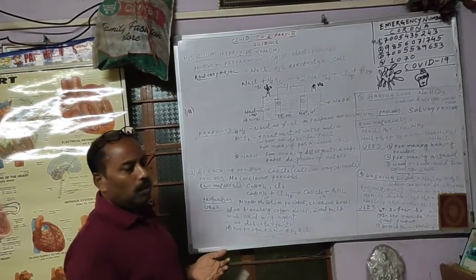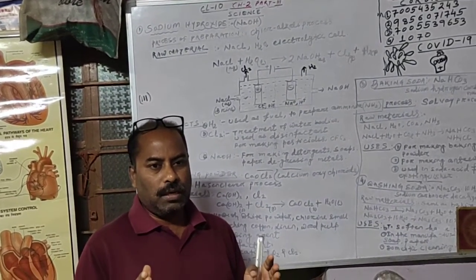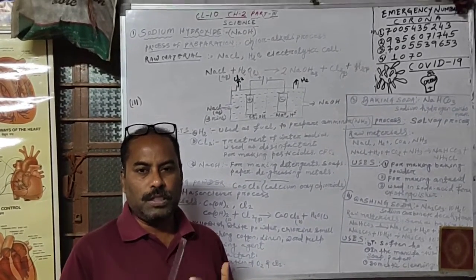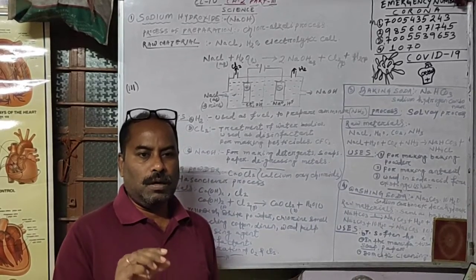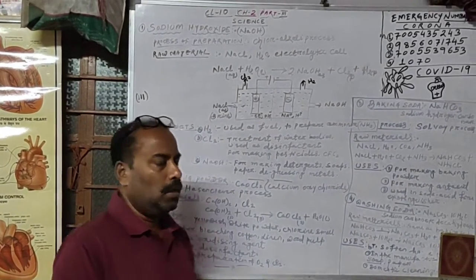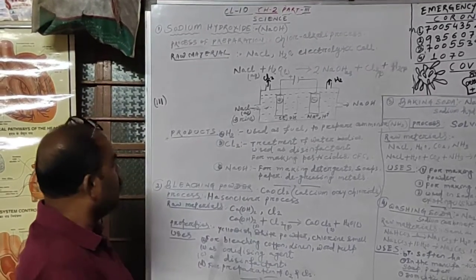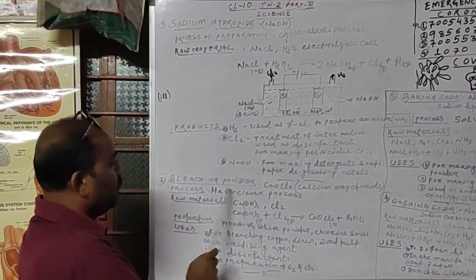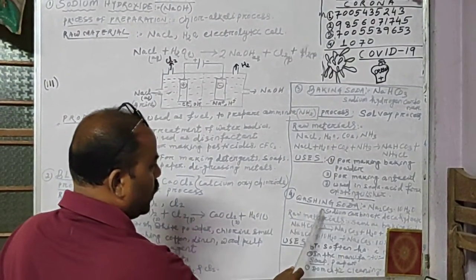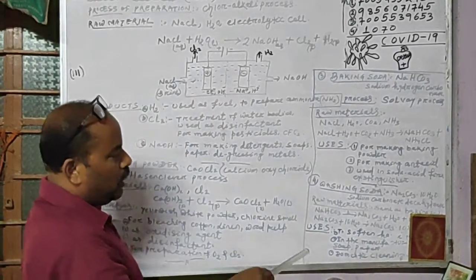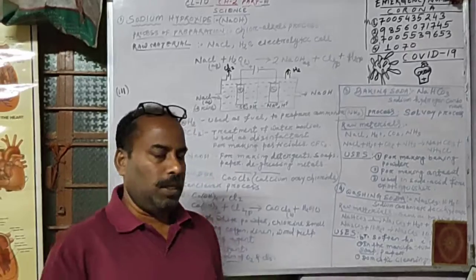Today we will discuss some salts which come in our everyday life and are very useful. These are: salt number one, sodium hydroxide; number two, bleaching powder; number three, baking soda; number four, washing soda; and another one called plaster of paris.